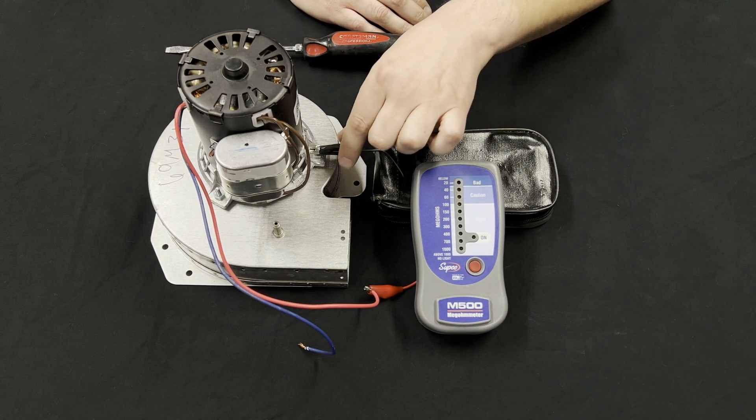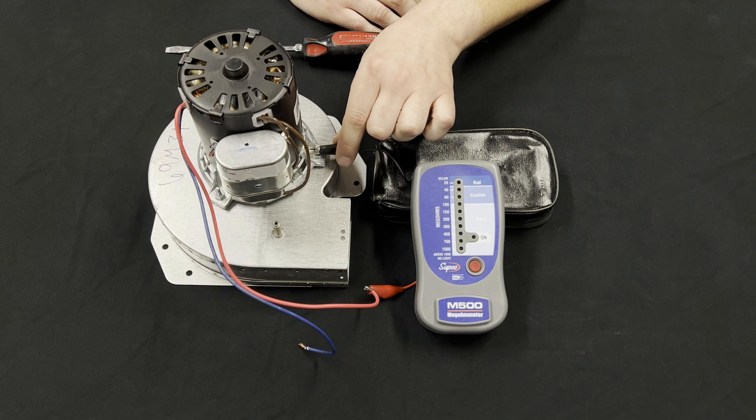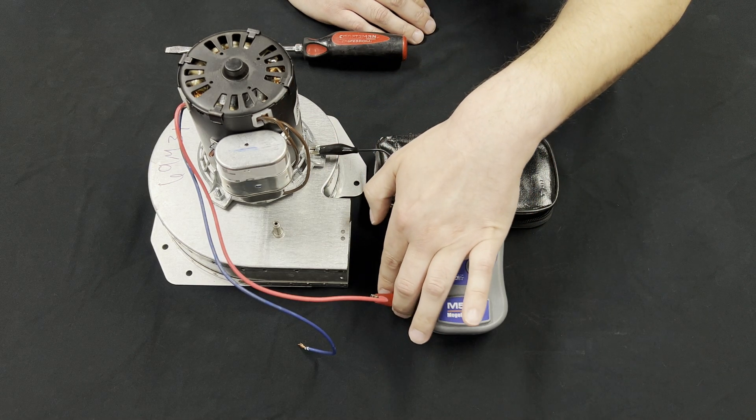The megameter comes with a black lead that hooks up to the ground or frame of the motor and a red lead which hooks up to the terminal.